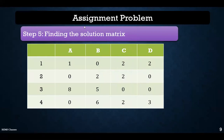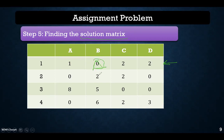After subtracting the column minima from each cell, we obtain this particular matrix. Next, we find the solution for this particular assignment problem. We pick a zero in any row or column having only one zero. For this particular row, we have only one zero, so we pick that zero. In this particular column, we have only one zero, so we pick that zero as well.